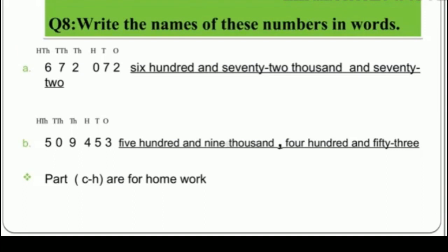Question 8: write the names of these numbers in words. Part A: 672072. First, place the place values — ones, tens, hundreds, thousands, ten thousands, hundred thousands. The first digit 6 has place value hundred thousands. Remember: hundreds always written alone, and after every hundred we write 'and.' So we write 'six hundred and.' The next two digits are 7 and 2, giving 72 thousand. So: 'six hundred and seventy-two thousand.'